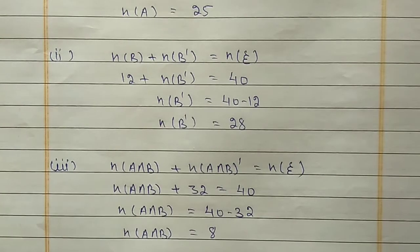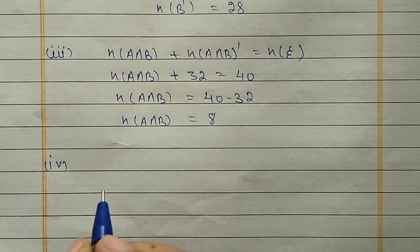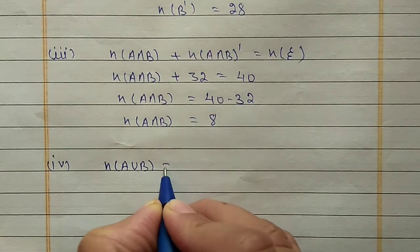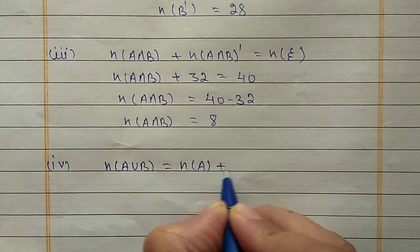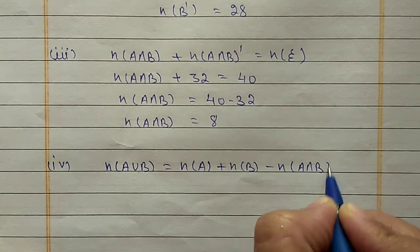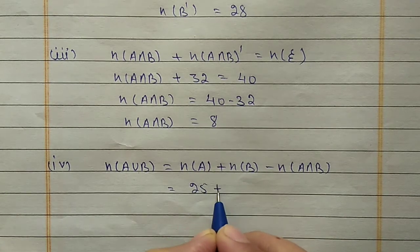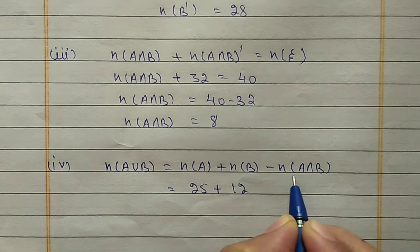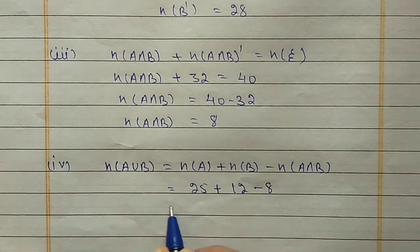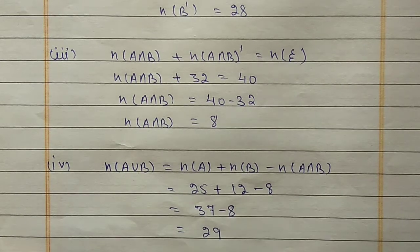For the fourth part, N(A∪B): using the first property N(A∪B) = N(A) + N(B) - N(A∩B). N(A) is 25, N(B) is 12, N(A∩B) is 8. So 25 + 12 = 37, minus 8 = 29.